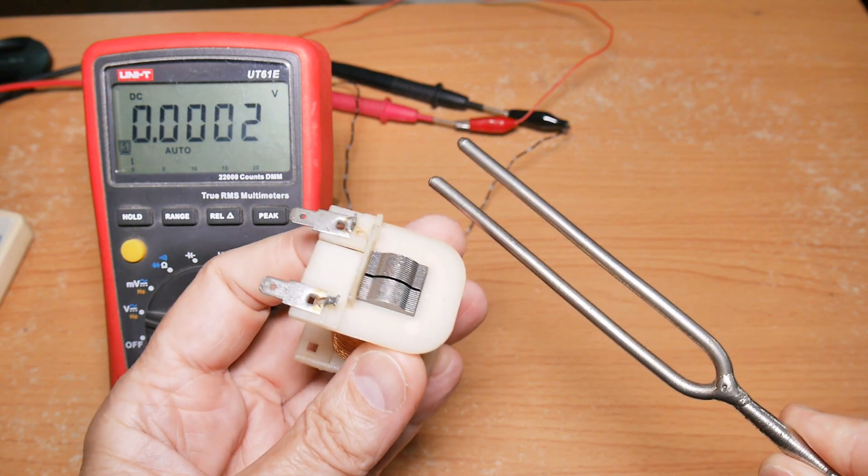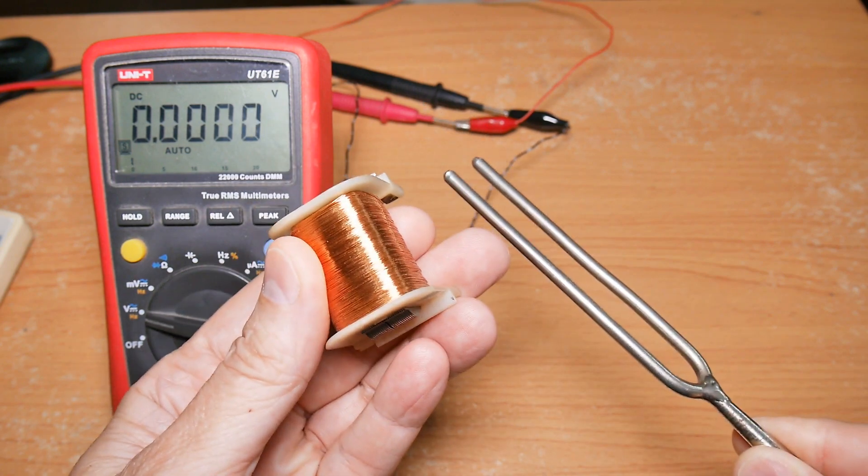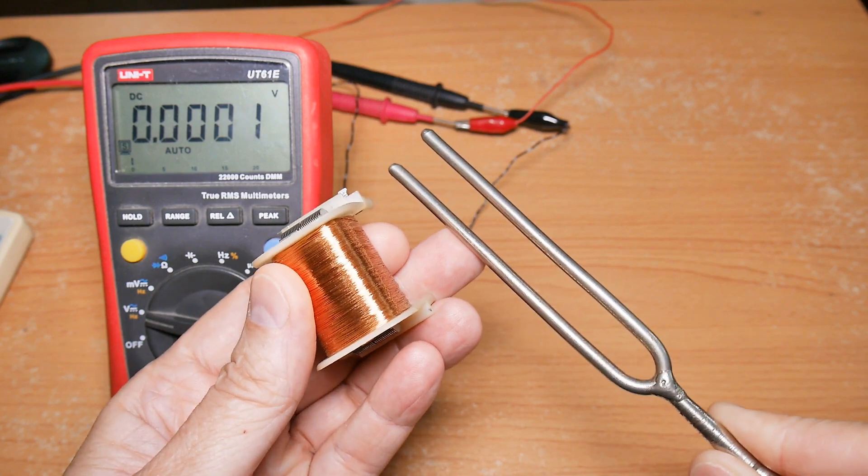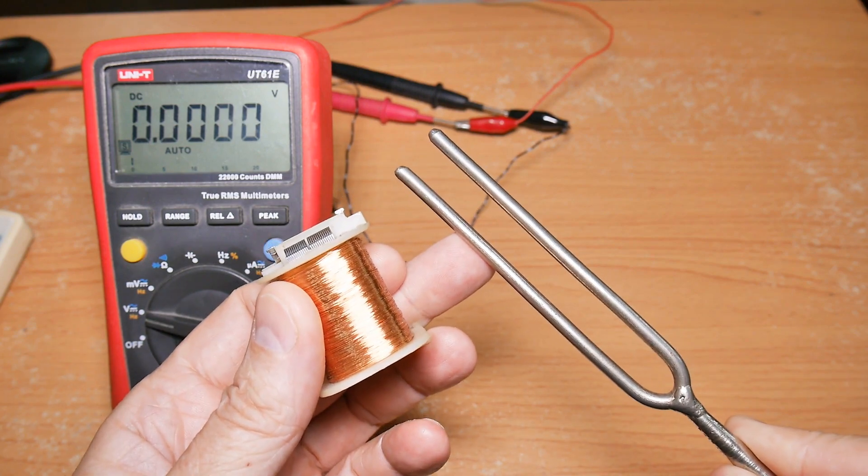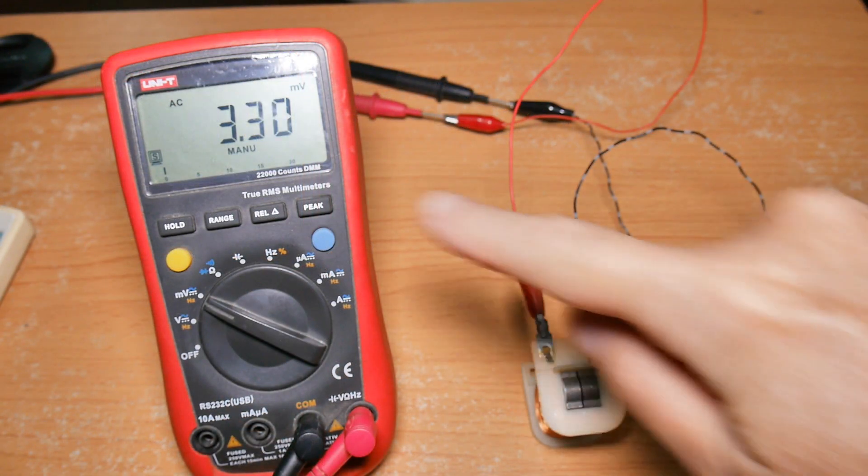Every once in a while I like to do something weird. What do you get when you cross a tuning fork with a coil wire? Sonic electricity. Well, let's give it a try. Here I hooked up our coil to a meter which is set to AC. Whack the tuning fork.